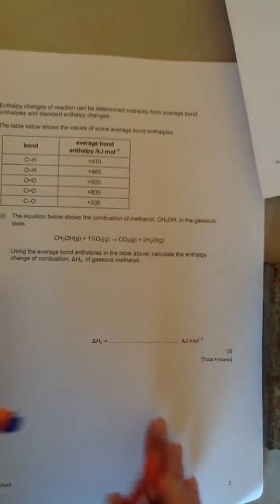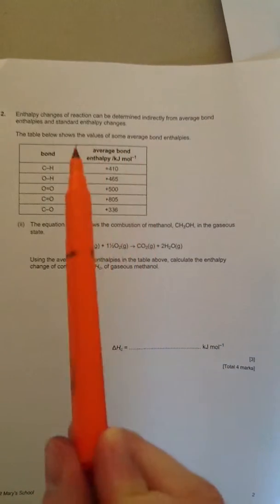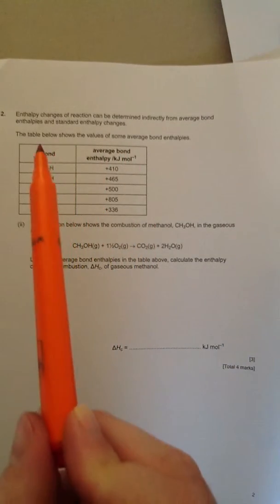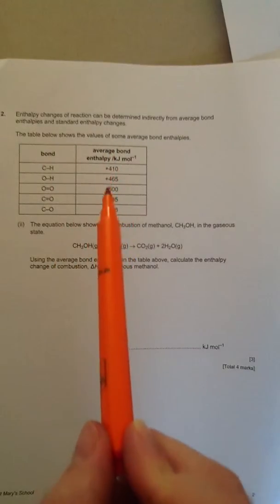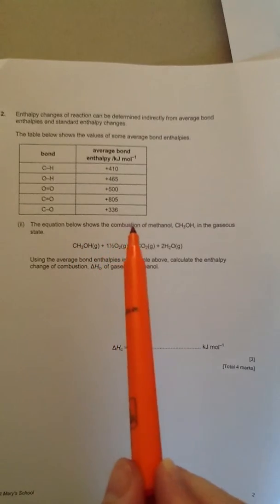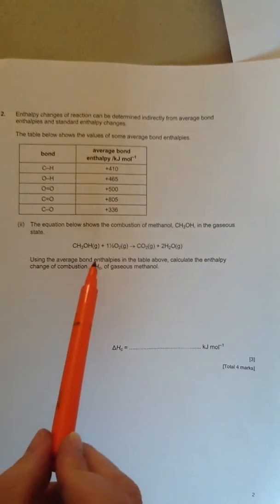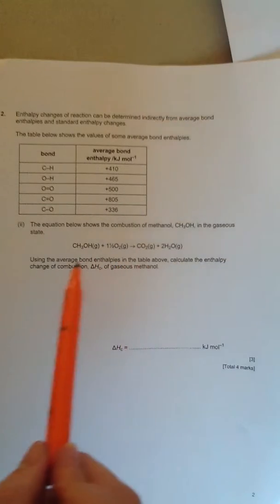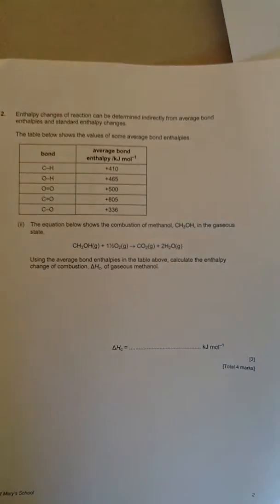The second question says enthalpy change of reaction can be determined indirectly from average bond enthalpies. We're given a list of bonds and average bond enthalpies. Look, these are all positive. It says the equation shows the combustion of methane in the gaseous state. Use the average bond enthalpies in the table to calculate the enthalpy change of combustion. These are both types of questions where you need to use the data in the equation and come up with a number.